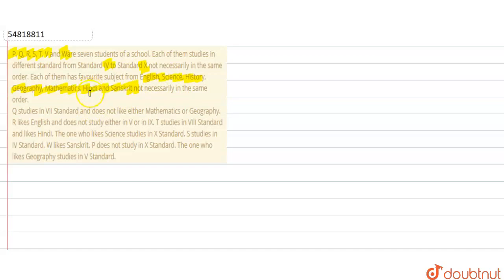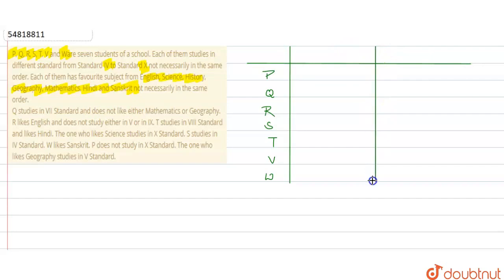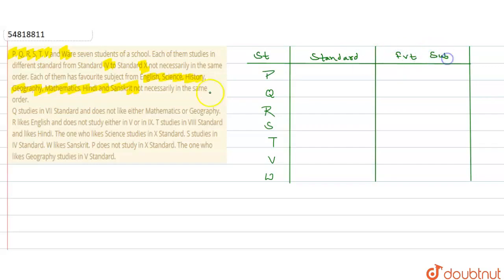Basically, there are 7 students who study in school. First of all, we will make a column for students — P, Q, R, S, T, V and W. Here we will create columns based on the given information: favorite subject and standard. So two columns will be made — one for standard and one for favorite subject.